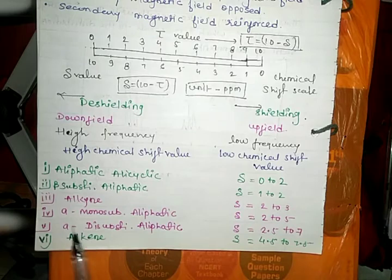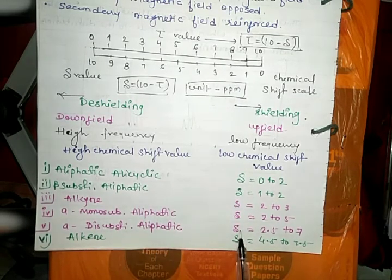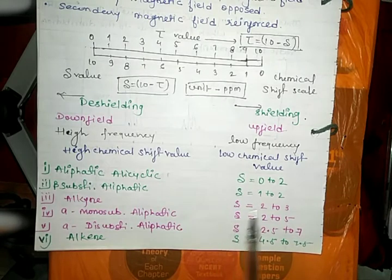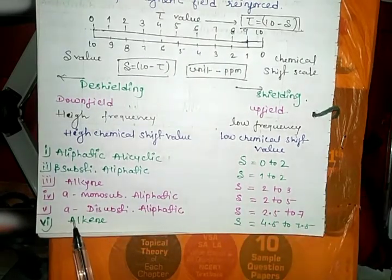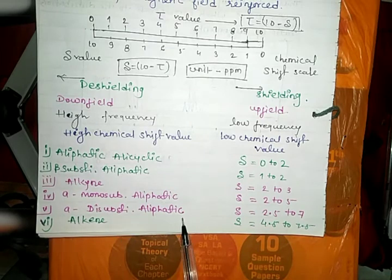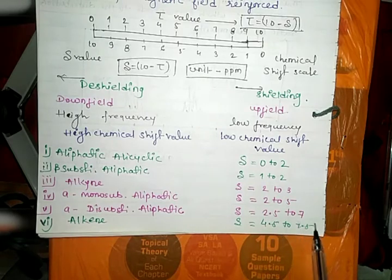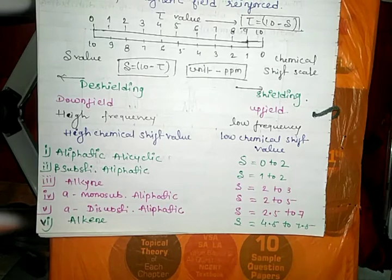For alpha mono-substituted aliphatic compound we get chemical shift value 2 to 5 parts per million. For alpha di-substituted aliphatic compound we get chemical shift value between 2.5 to 7 parts per million. For alkenes we get delta value 4.5 to 7.5 parts per million.